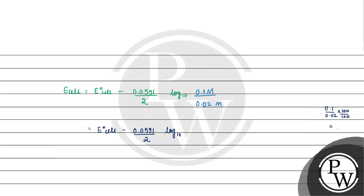0.02 - what do we do? Multiply by 100. So 10 by 2 will happen, which is 5. Log with the base 10 of 5, that is 0.699.